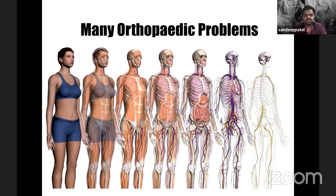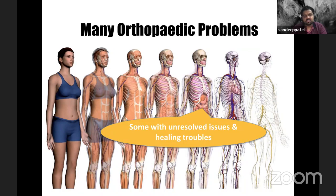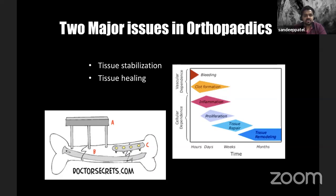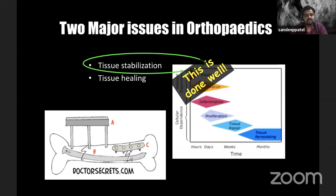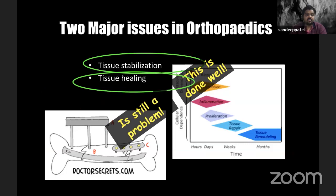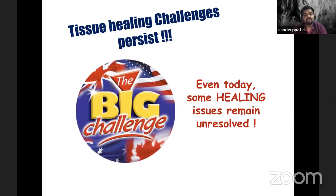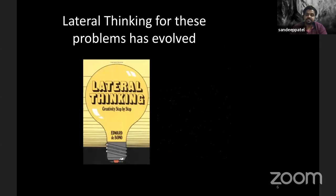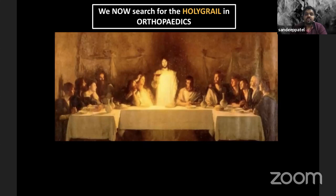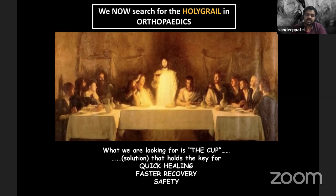We have many orthopedic problems and are trying solutions for them, but some remain tough and unresolved due to healing troubles. The two major issues in orthopedics are tissue stabilization and tissue healing. Tissue stabilization has seen good advancements over the last 70 years. However, tissue healing is still a problem — even today some healing issues remain unresolved. So lateral thinking for these problems has evolved, and we are now in search of the holy grail in orthopedics: good healing, faster recovery, and safety.